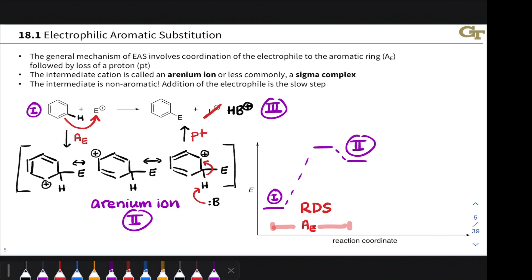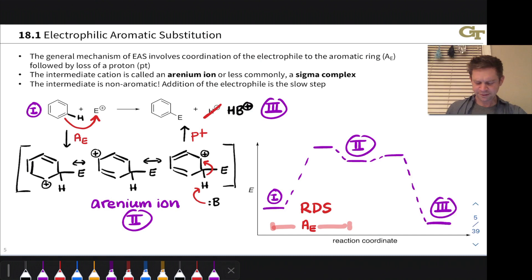And this reestablishes aromaticity. And it's heavily, heavily downhill. So if you think of the products as Roman numeral III, that's going to be way, way downhill to get to the final products here.